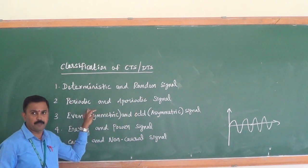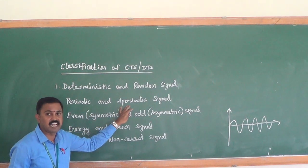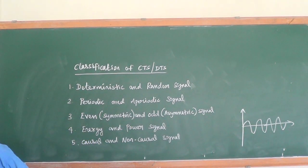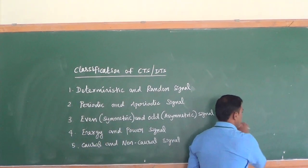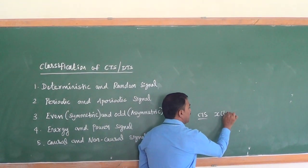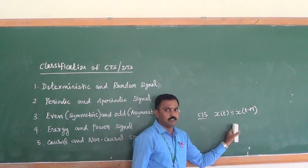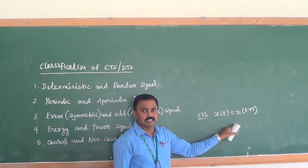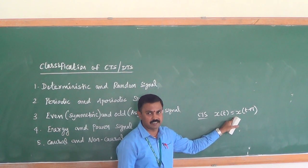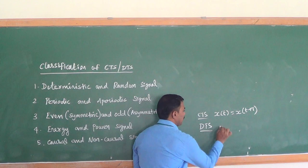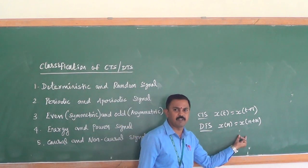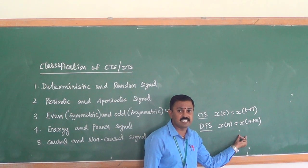An example of a periodic signal is a power signal. An example of an aperiodic signal is an energy signal. For the mathematical analysis of periodic and aperiodic signals in continuous time, we represent: x(t) = x(t + T). If this condition is satisfied, the signal is periodic. If it is not satisfied, the signal is aperiodic.